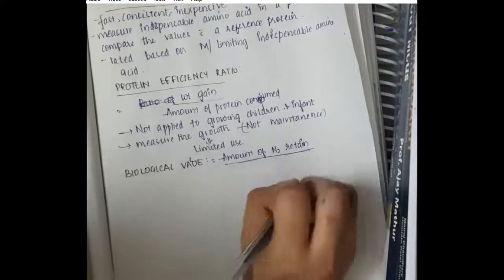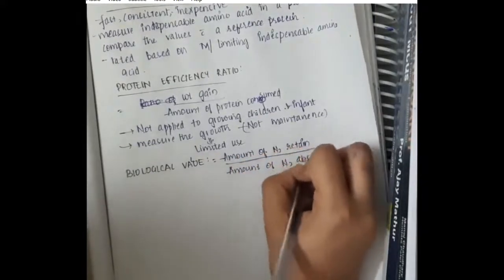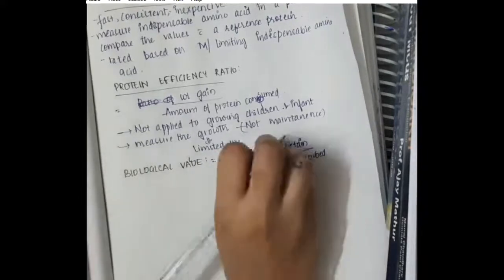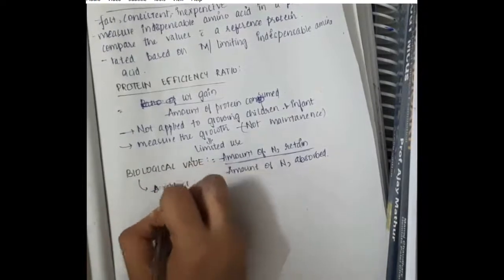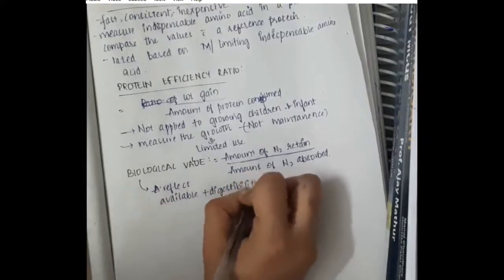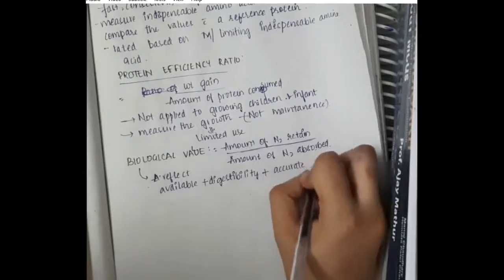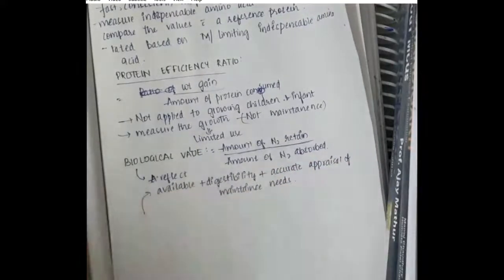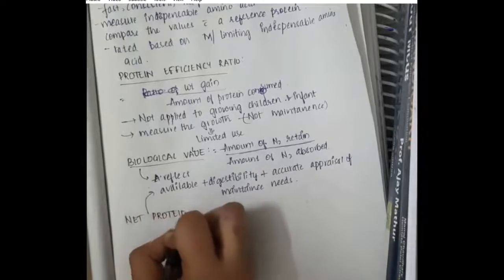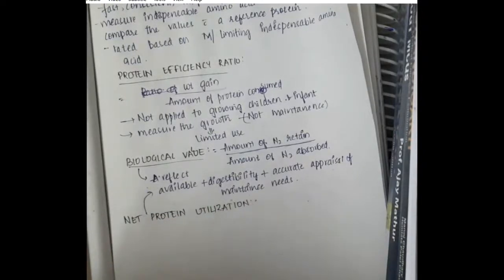Biological value is the amount of nitrogen retained divided by the amount of nitrogen absorbed. It reflects the availability, digestibility, and actual appraisal of maintenance needs. The food we eat provides protein, which is digested and releases nitrogen. Biological value gives information about protein availability and digestibility — that is, conversion of protein into smaller parts such that nitrogen, as ammonia, is released.